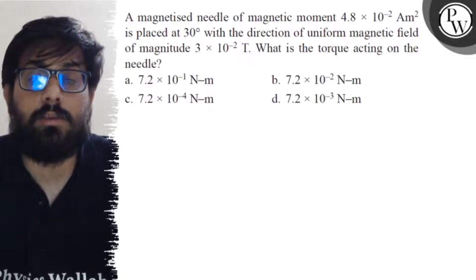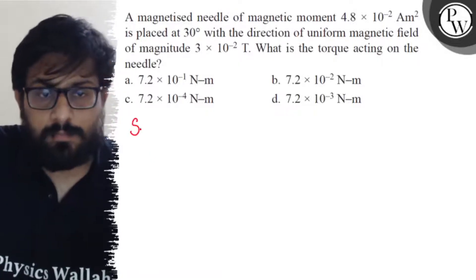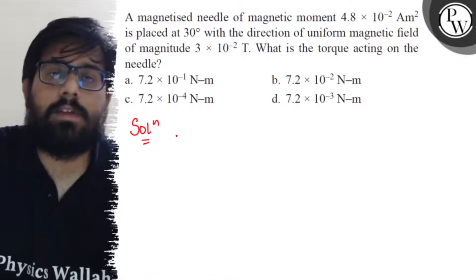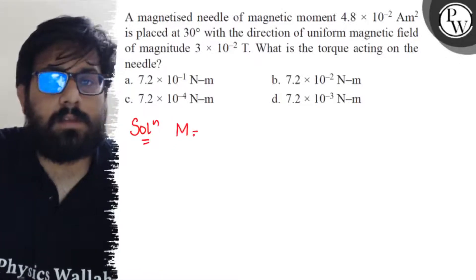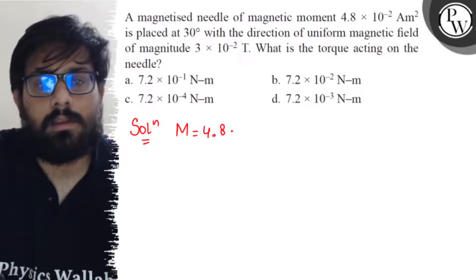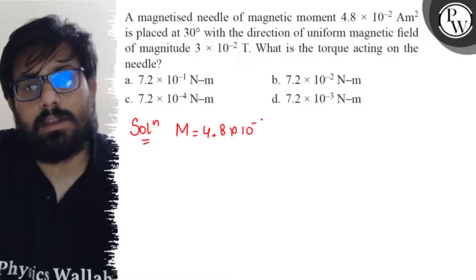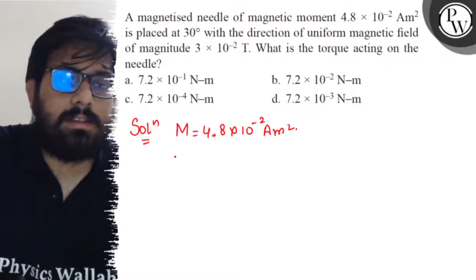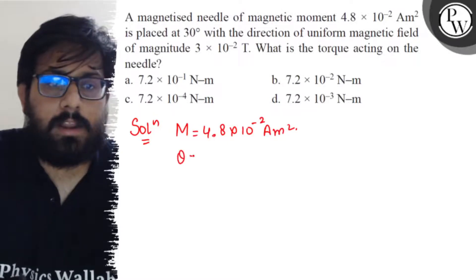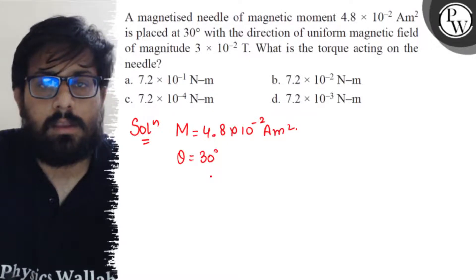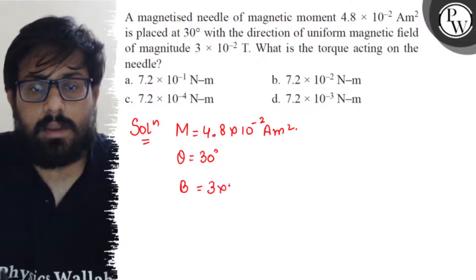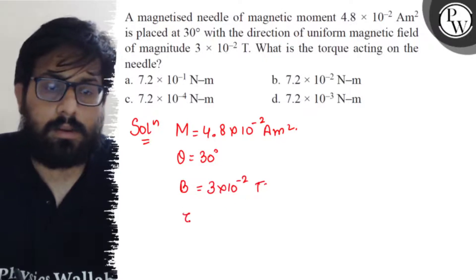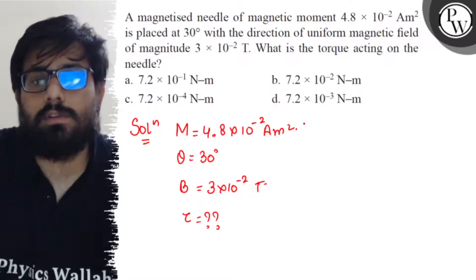In this question, the given values are: magnetic moment m = 4.8 × 10⁻² A·m², the angle θ = 30 degrees, and the magnetic field B = 3 × 10⁻² tesla. We need to calculate the value of torque.